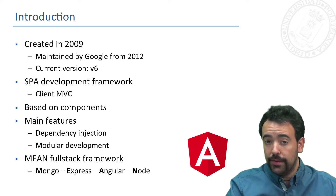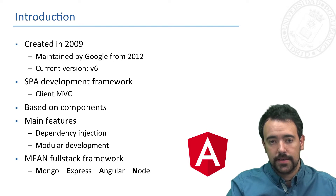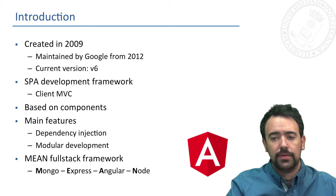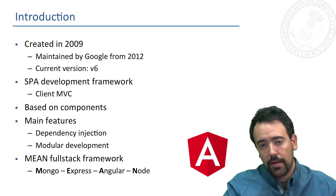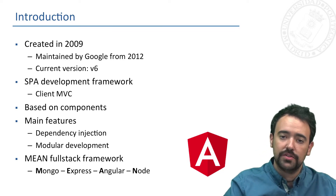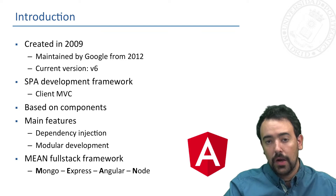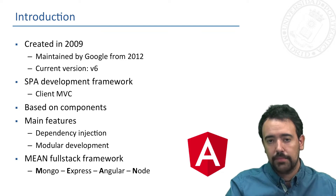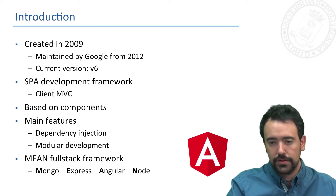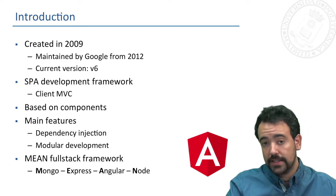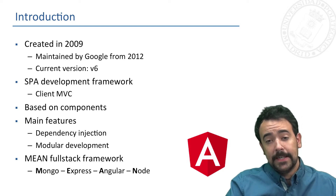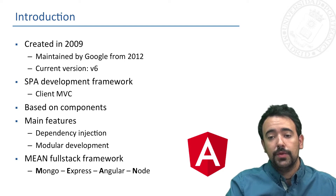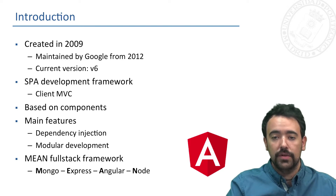Angular is based on components — we will see in detail what a component is later. The main features are the dependency injection feature and the fact that an Angular application is based on a modular pattern that allows us to totally encapsulate our application in modules. Thanks to Angular we can deploy complex applications using MongoDB, Express, and Node.js, using what is called the MEAN full stack framework.